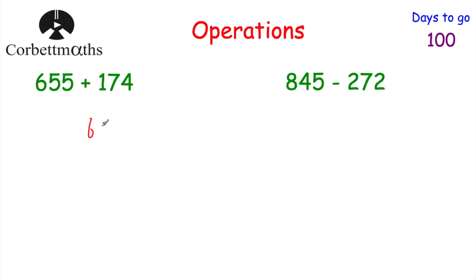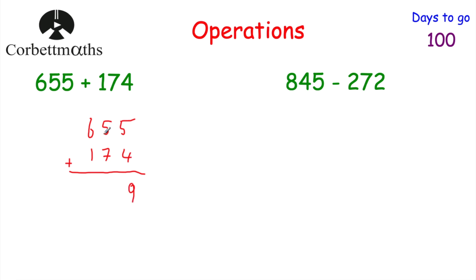We've got 655 and 174 beneath it, lining up the units, the tens and the hundreds. Then we put a line beneath and a plus sign. Starting from the right: 5 plus 4 is 9. Then 5 plus 7 is 12, so we put the 2 down and carry the 1. And 6 plus 1 plus 1 is 8. So 655 plus 174 is equal to 829.